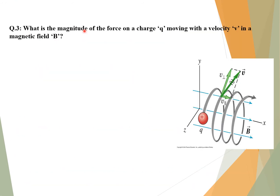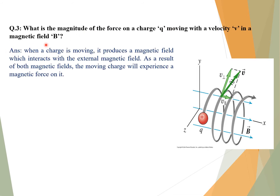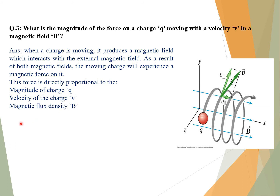Question number three: What is the magnitude of force on a charge Q moving with a velocity V in a magnetic field B? Answer: When a charge is moving, it produces a magnetic field which interacts with the external magnetic field. As a result, the moving charge experiences a magnetic force. This force is directly proportional to the magnitude of charge, velocity V, and magnetic flux density B. It can be written as F = Q(V × B), giving F = QVB sinθ.